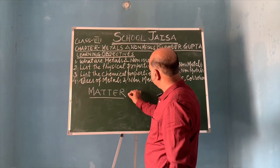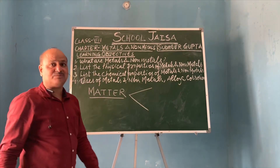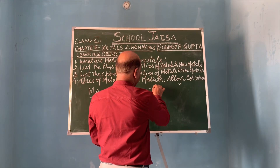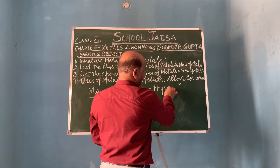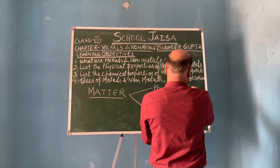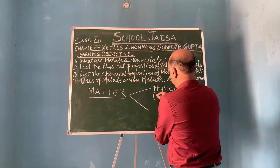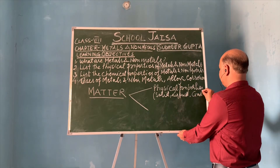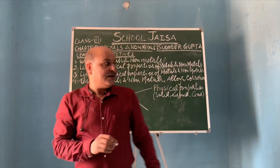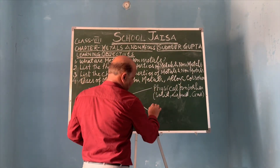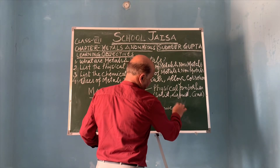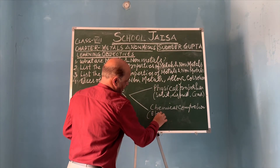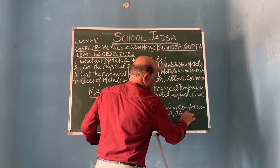This matter is classified on the basis of physical properties and chemical composition. If classified on the basis of physical properties, then they are solid, liquid, and gas. If classified on the basis of chemical composition, then they can be element, compound, and mixture.